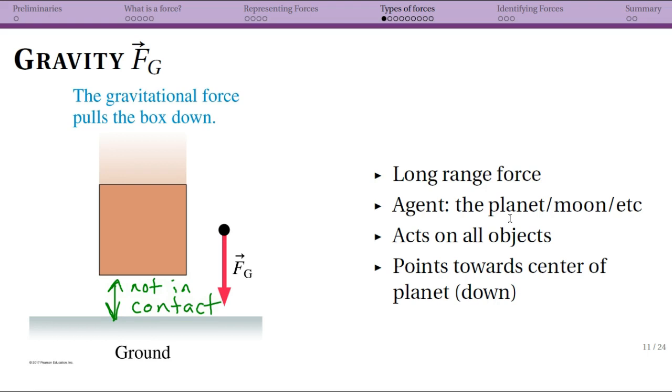The agent is the earth or whatever planet or moon you were talking about, the sun even, but in general will be on planet earth. This acts on all objects. Every object around earth that has mass, which all of the objects we will deal with in physics class have mass, all of the objects feel the force of gravity.